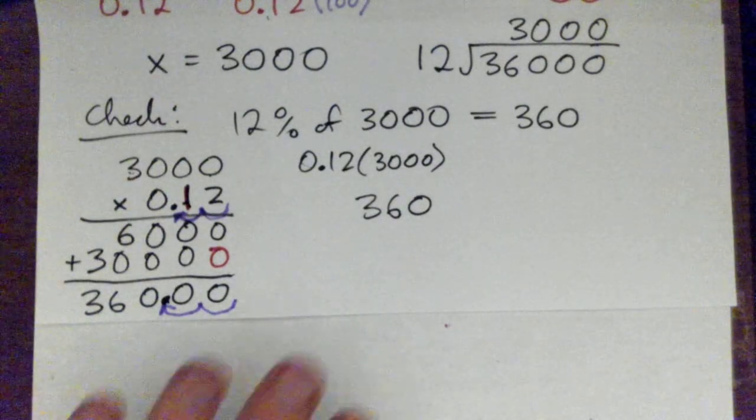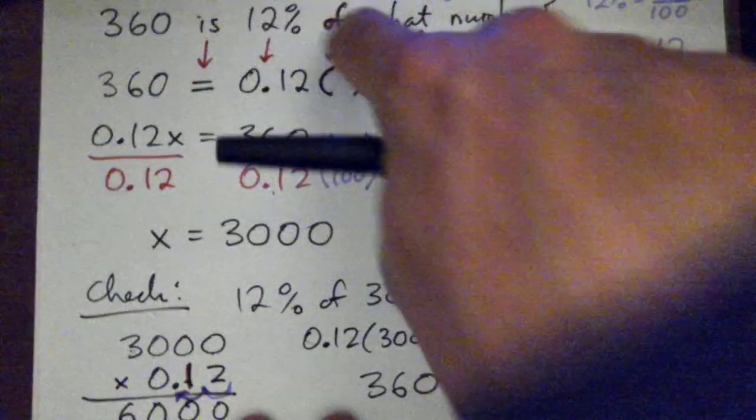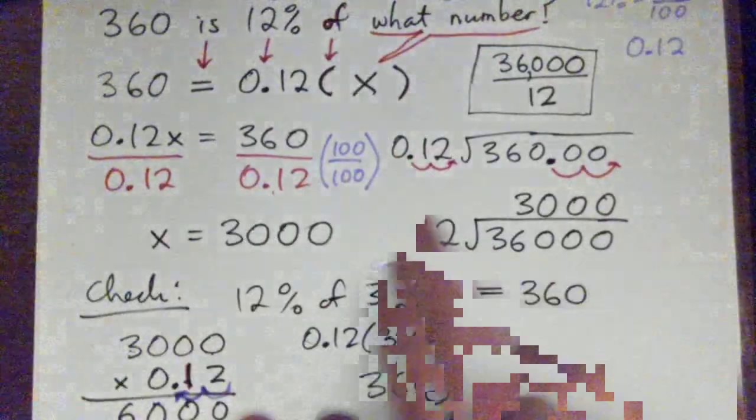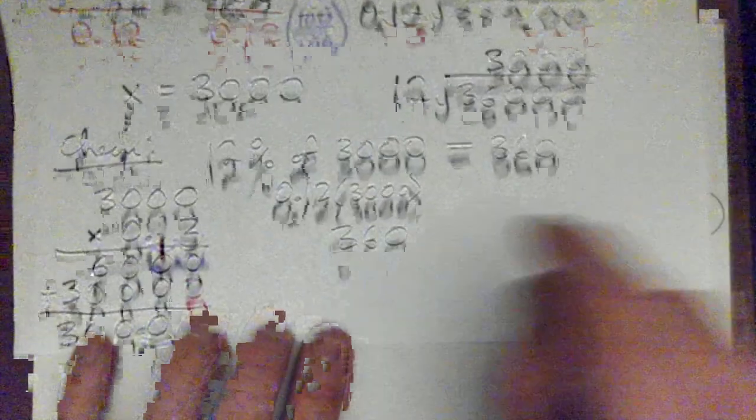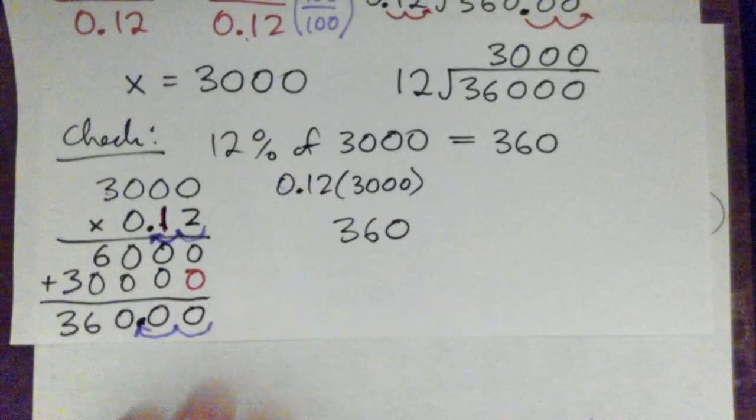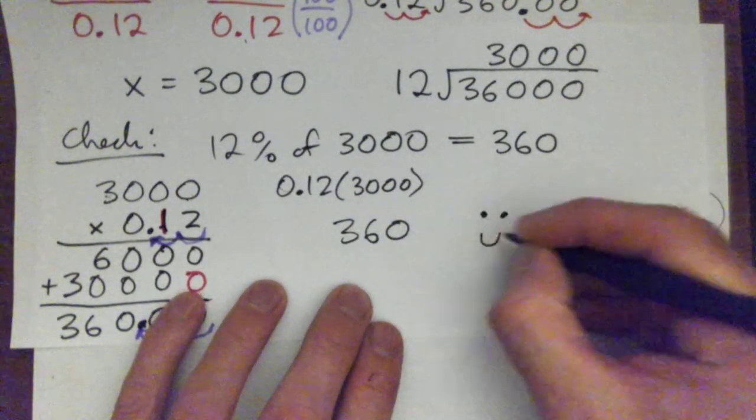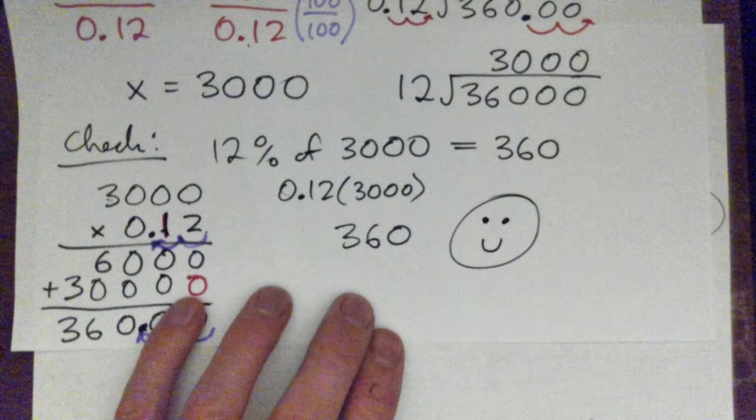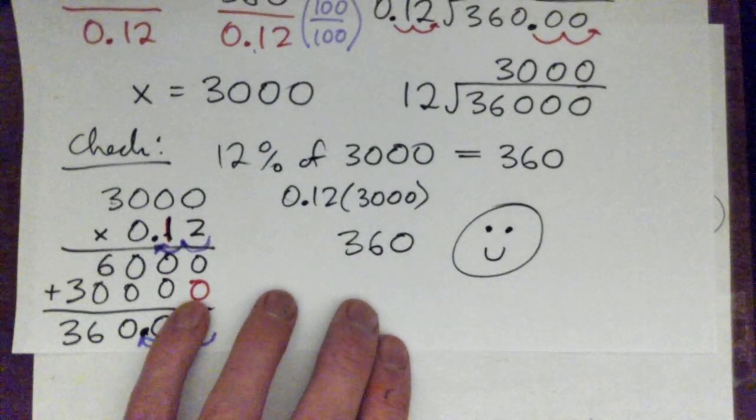So that's a big question because we reviewed - look, we set up an equation from a sentence, big deal - 'of' means multiply. We then divided by decimals, we reviewed that from a written thing, and then we checked by multiplying by decimals. A lot in that question. And it all worked out in the end. So good one. Okay.